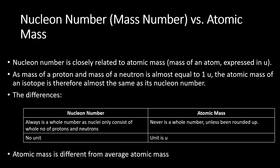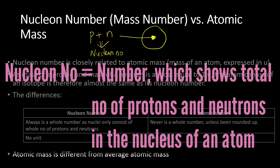What is atomic mass and the differences between nucleon number or mass number with atomic mass? Imagine there is an atom, and in the nucleus of the atom it consists of protons and neutrons. The sum of protons and neutrons gives us a nucleon number — basically, a number which tells us how many protons and neutrons are inside the nucleus of an atom.